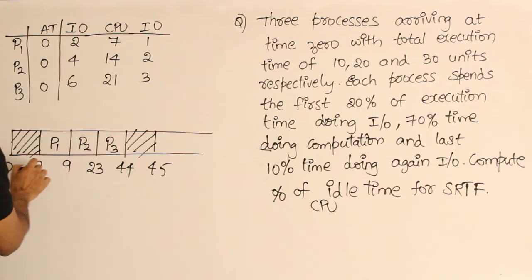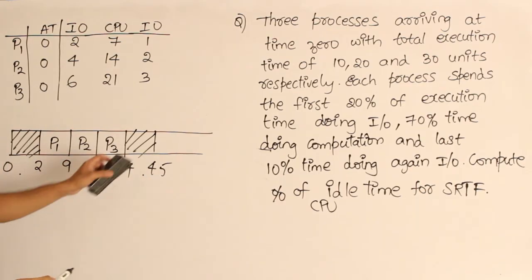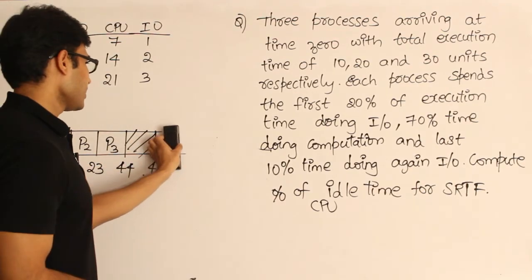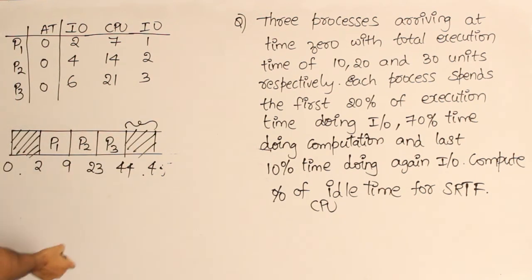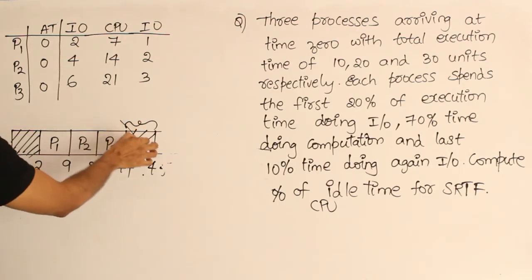This is idle and this is idle. CPU is going to be idle during these two times. Next, the next schedule can start. It is a dilemma whether to take this part as idle or not, because it can start with the next one. So you need not take this one as the idle part.